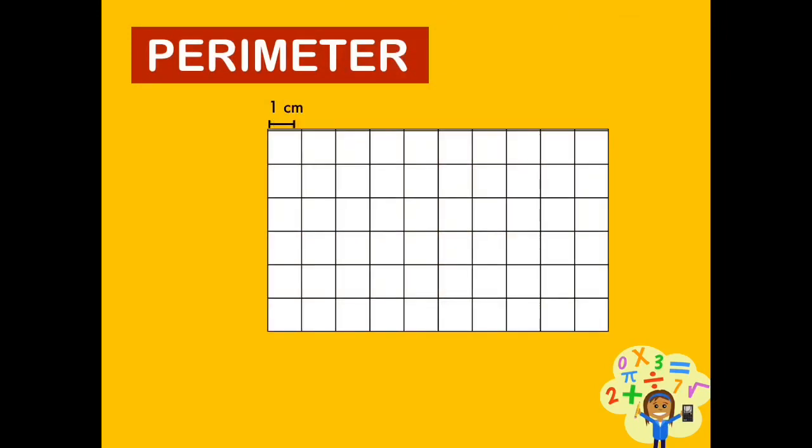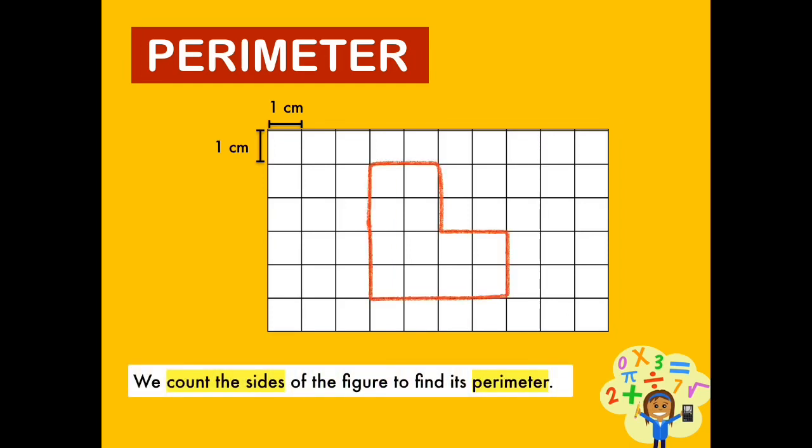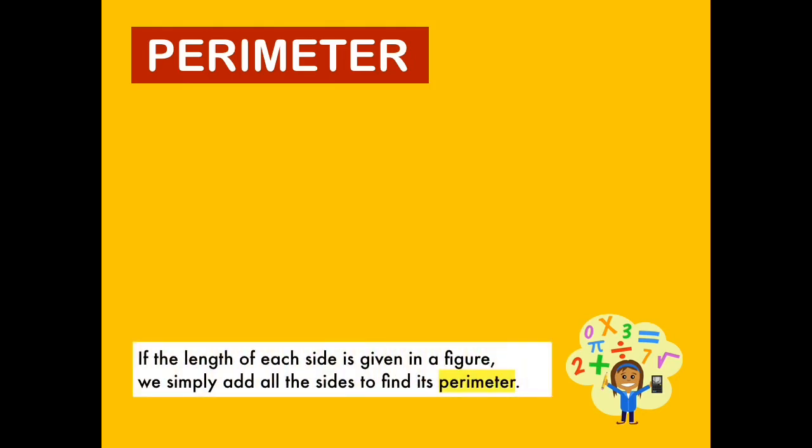What is the perimeter of the given figure? I'll give you 15 seconds to find out the answer. The perimeter of the figure is 16 centimeters. In this example, we simply add all the sides to find its perimeter.